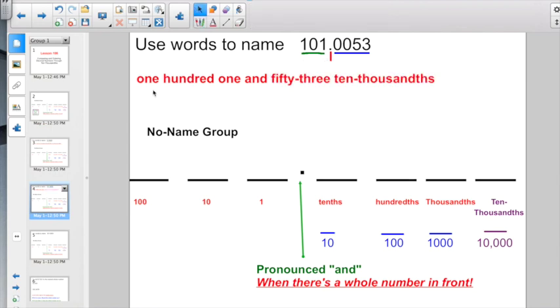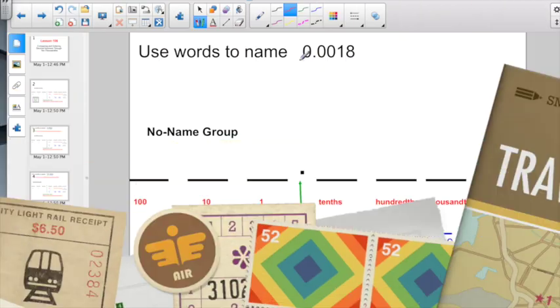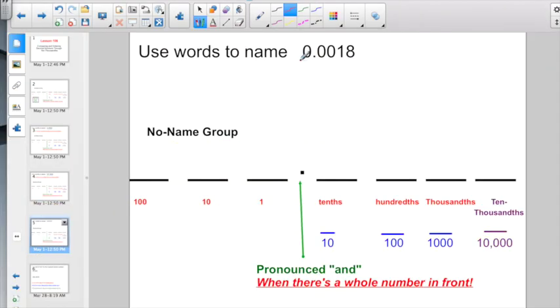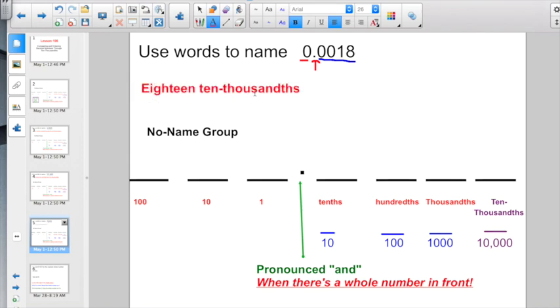For the grand total of 101 and 53 ten-thousandths. And our last one here, if I just have a 0 in my whole number place, I don't want to say 0 and. Let's just go ahead and just take a look at the decimal number. So I have 18, 18 ten-thousandths is all I would have to write using words. And it's about that easy. Name the number, name the group.